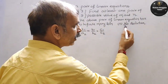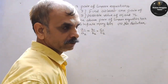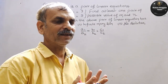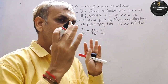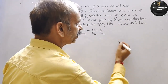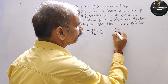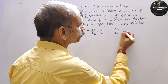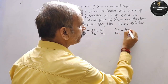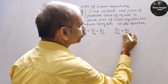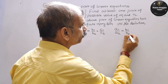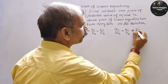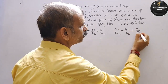Next आपका होता है no solution। तो no solution मतलब parallel lines आएं। उसकी condition क्या होती है? A1 by A2 is equal to B1 by B2 is not equal to C1 by C2.